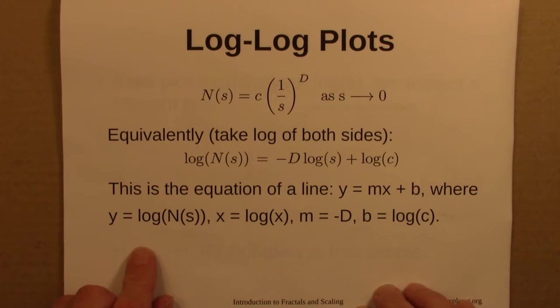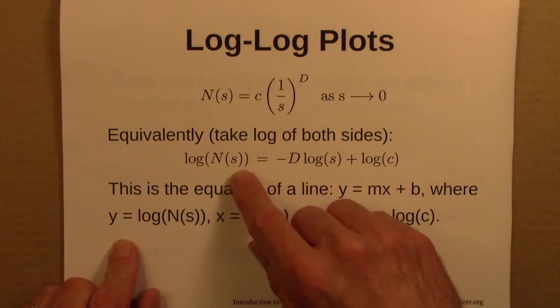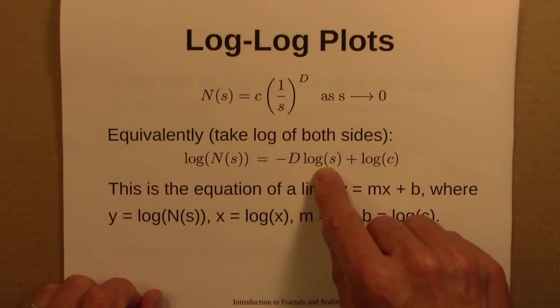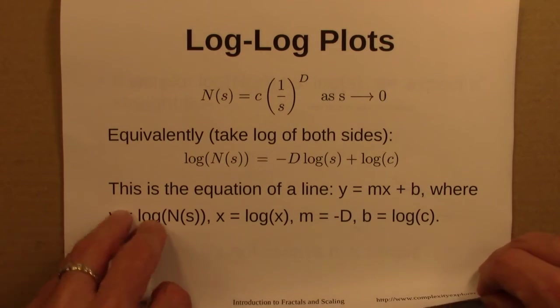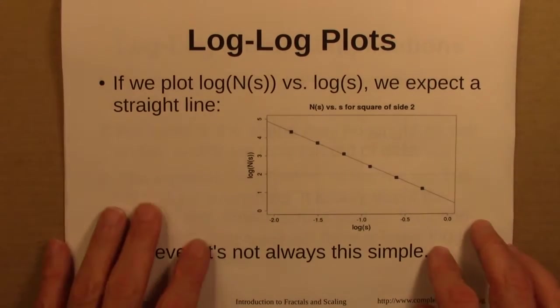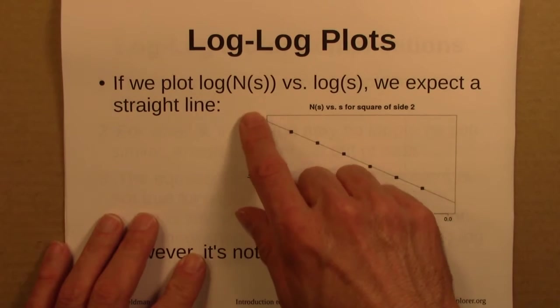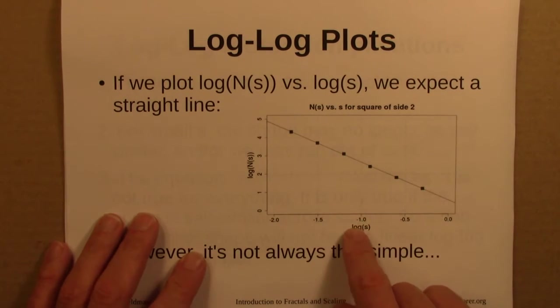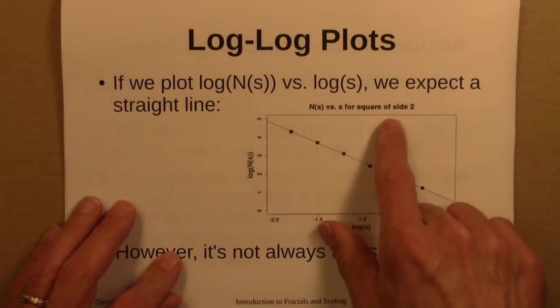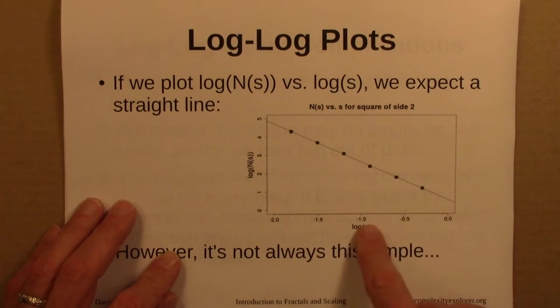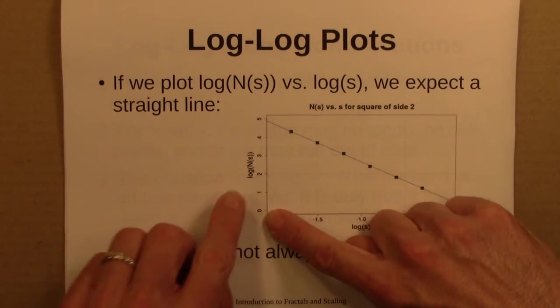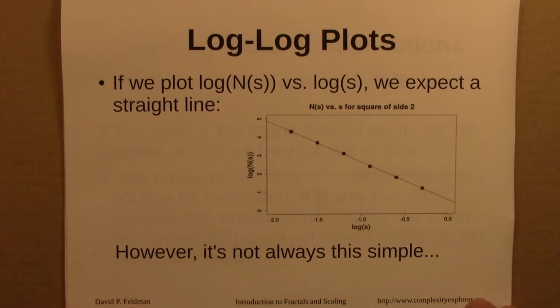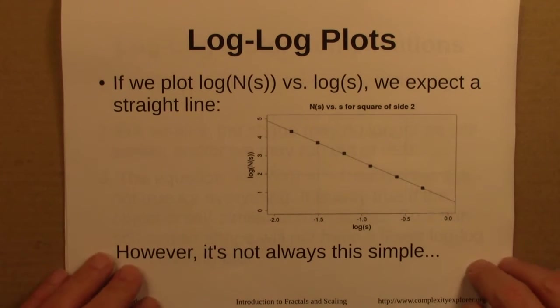So in this equation, y is log N(s). The slope is minus d. This is playing the role of x, and that's b, the intercept. So if we plot log of N(s) on the y axis, log s on the x axis, we would expect a straight line. So this is the result of doing that for a square. A number of different box sizes. Boxes are getting smaller here. As boxes get smaller, you need more of them to cover the shape. So this is very nice and simple, but real life is not always this simple.